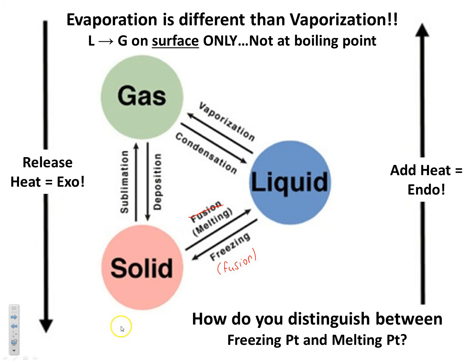How do you distinguish between the melting point and the freezing point? This is kind of a trick question — you don't really, because the freezing point and the melting point are exactly the same temperature. Water freezes at 0°C and also melts at 0°C. Freezing is just going one way, and melting is going the other way.